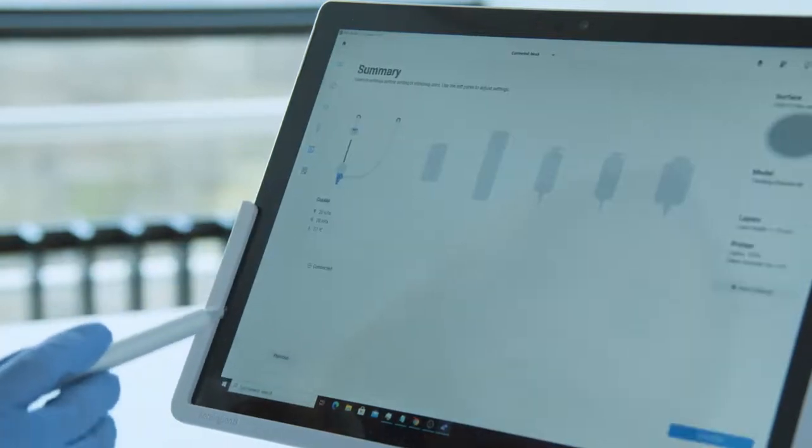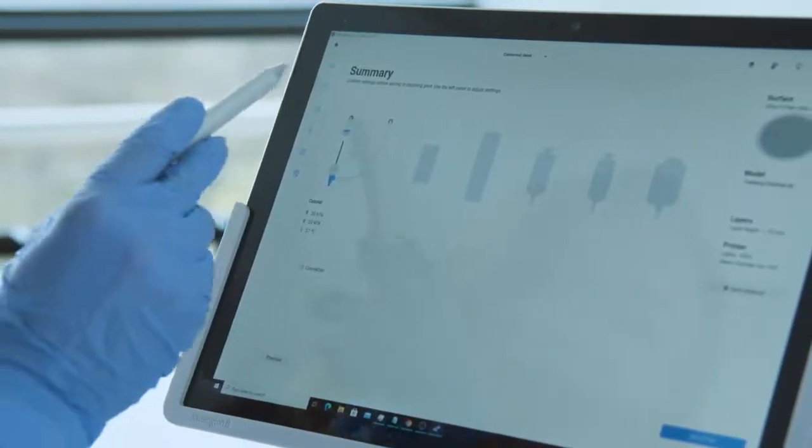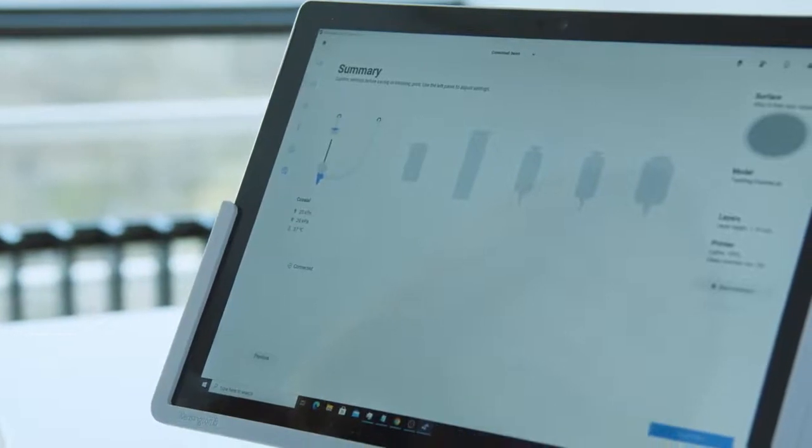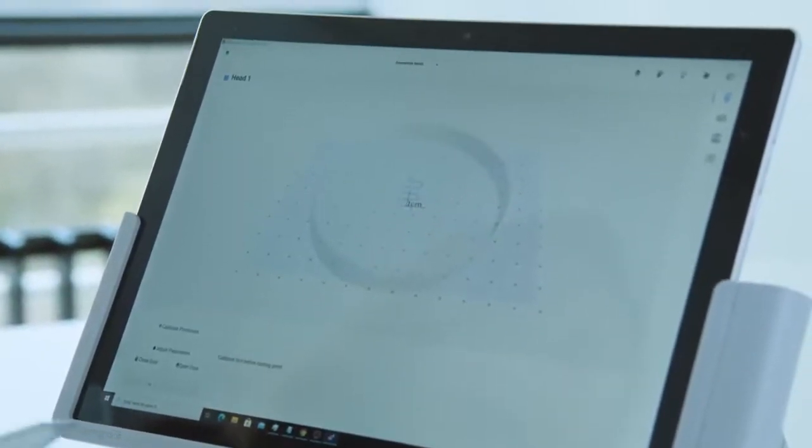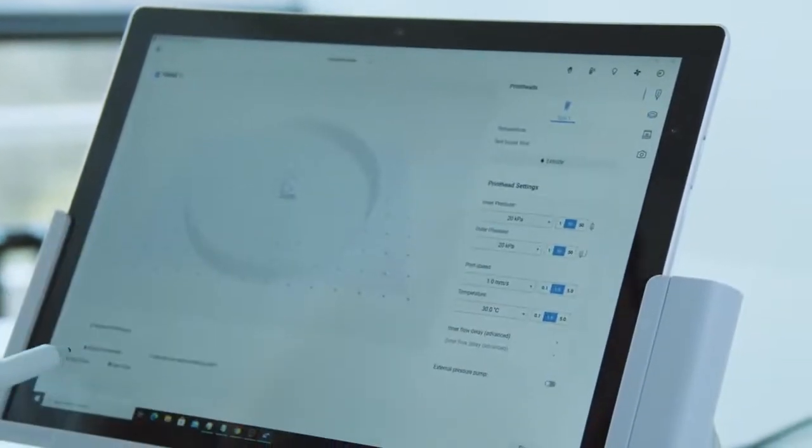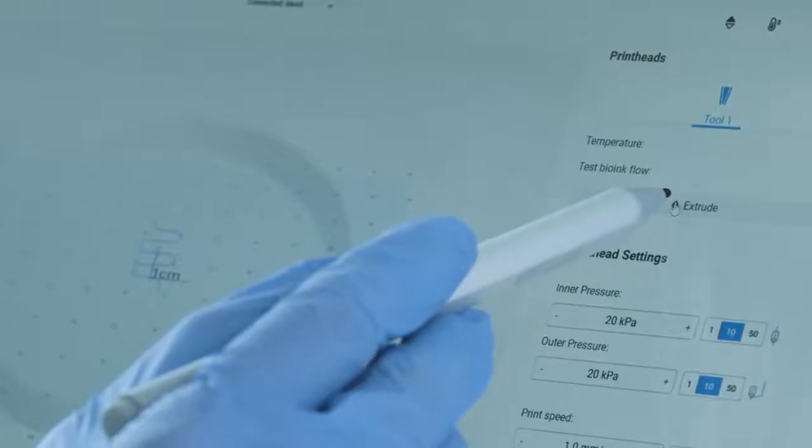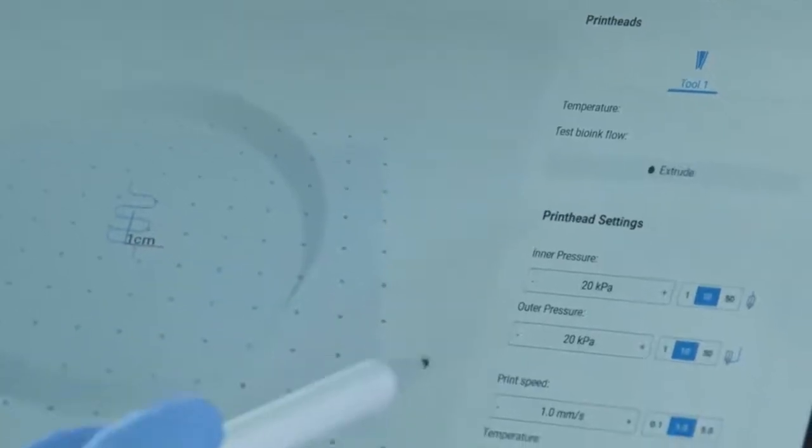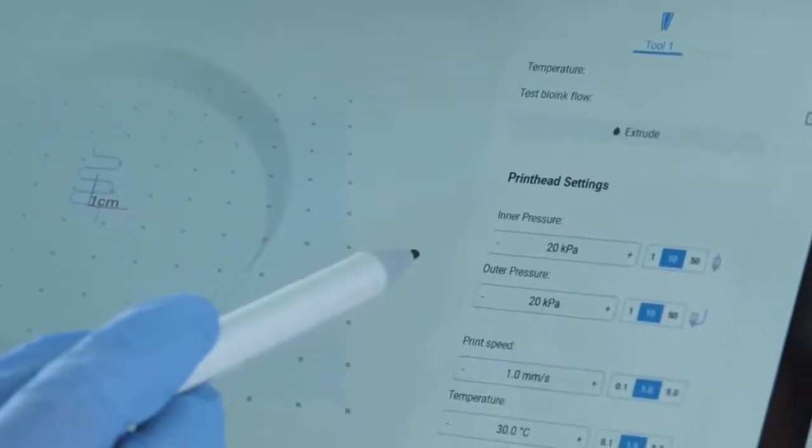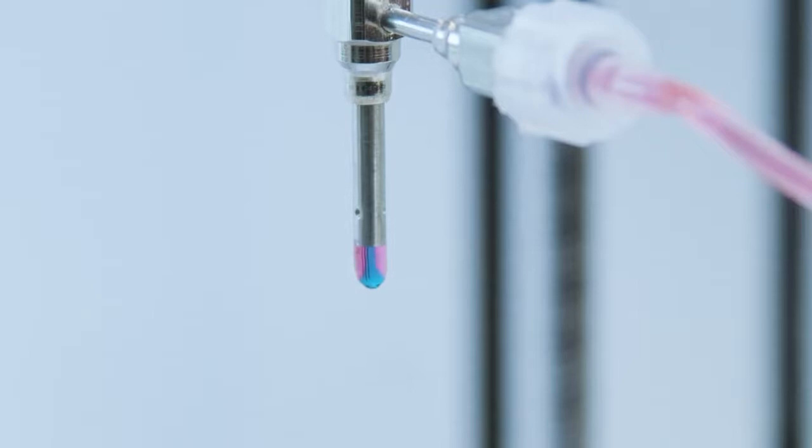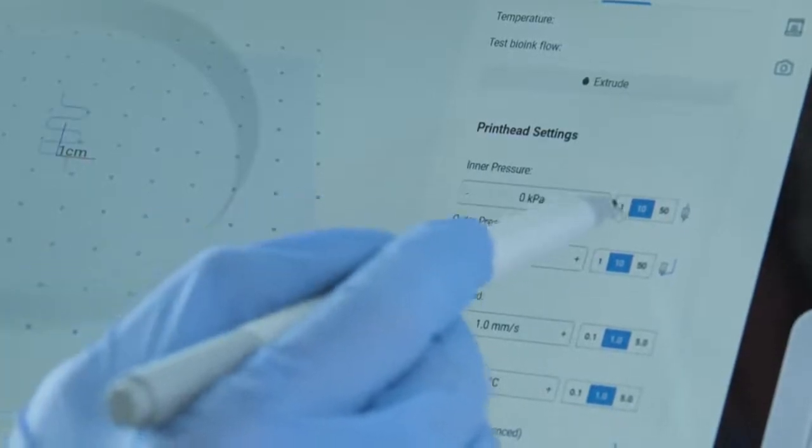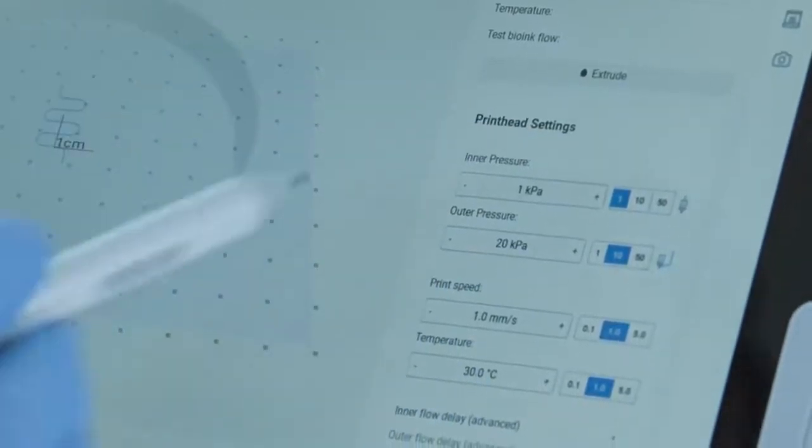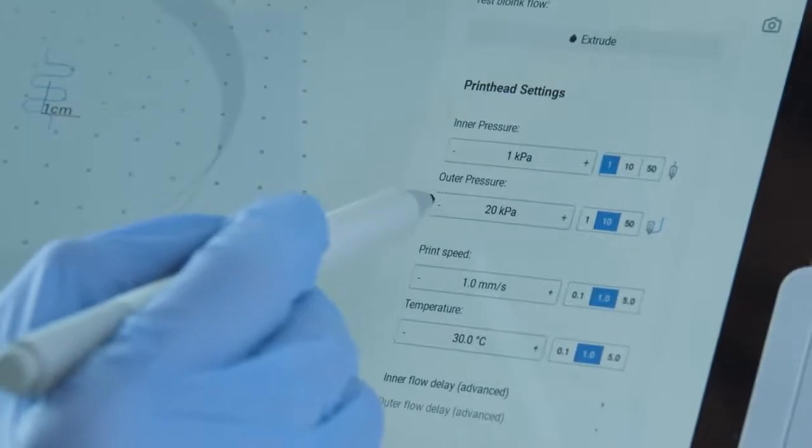Here you can see the summary of the printing settings. Press go to print. From the right panel you can test the extrusion before starting to print and make sure that the inner and outer extruded bioinks are visible and concentric when you are printing. You can use this panel to adjust the printing settings further, even during the bioprinting process, to improve the resolution.